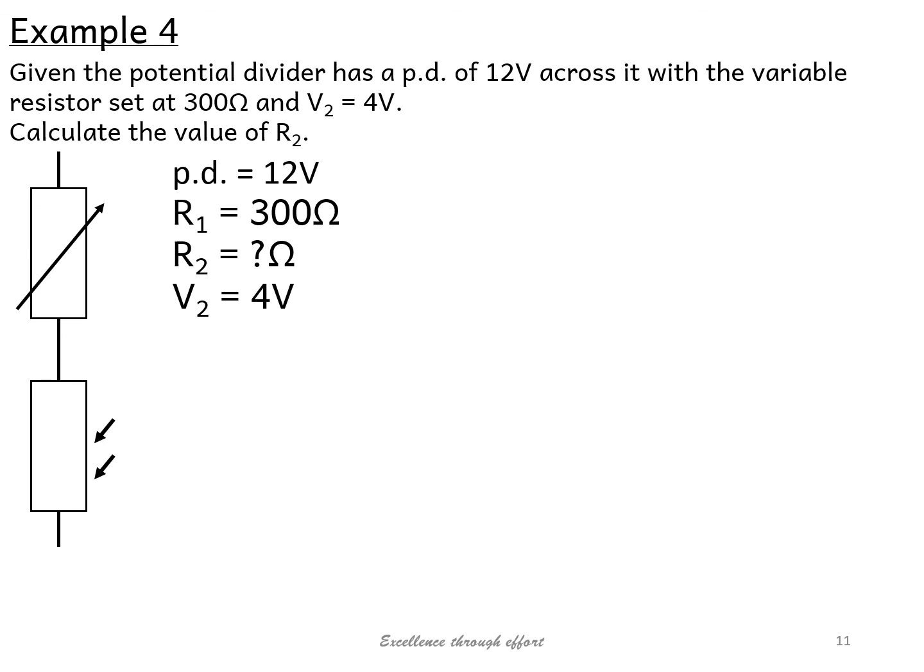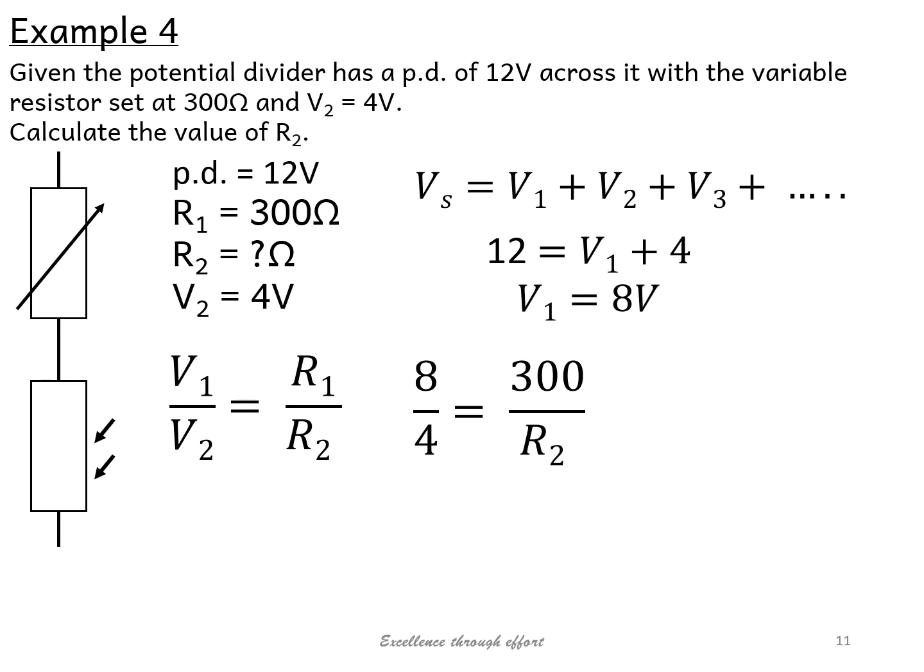So hopefully you did the usual: you wrote down what we had using your KFC technique. You then had to work out what V1 was using this equation, so hopefully you got 8 volts. Then, using this equation here, plug in the numbers. Again, I would work out the stuff on the left-hand side so you know 2 is equal to 300 over R2. And again, I would hope you would realize you're just swapping these two around, and that gives you an answer of 150 ohms.